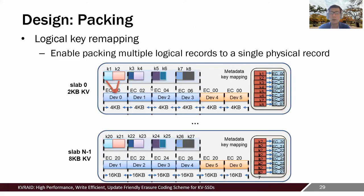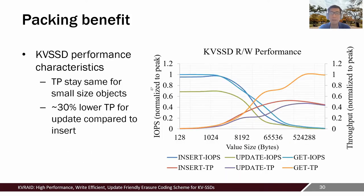A great benefit from logical key to physical key mapping is that it enables packing multiple logical records into a single physical record, which helps reduce the number of write IOs. As shown in the figure, write throughput stays nearly the same for smaller records from around 128 bytes up to around 4,000 bytes. In-place updates for existing records incur around 30% performance loss, so proper packing and our out-of-place update approach can greatly benefit overall write performance.